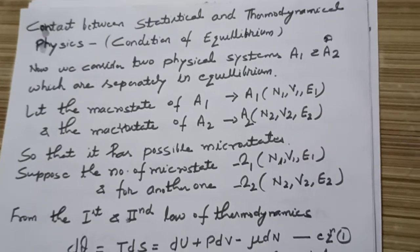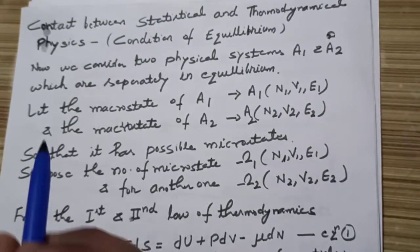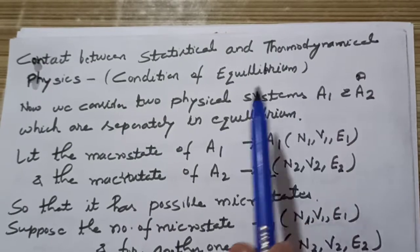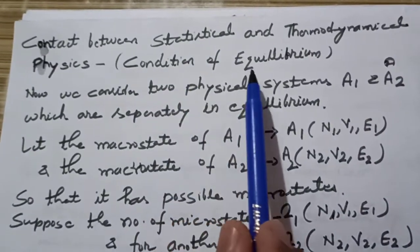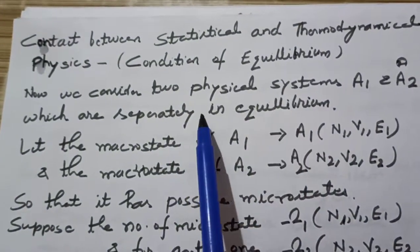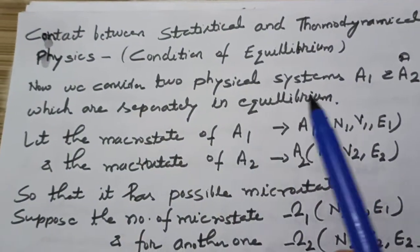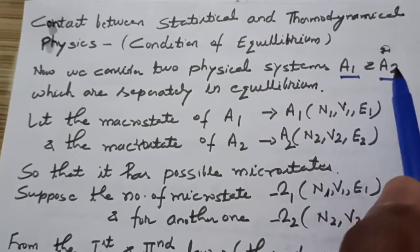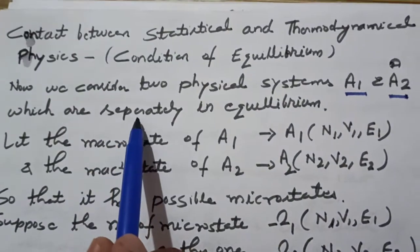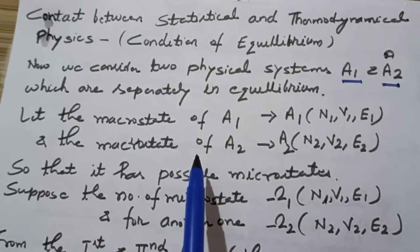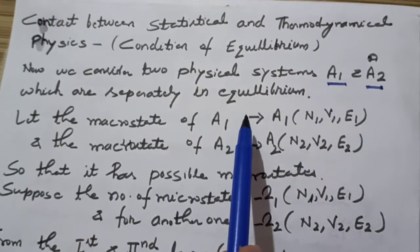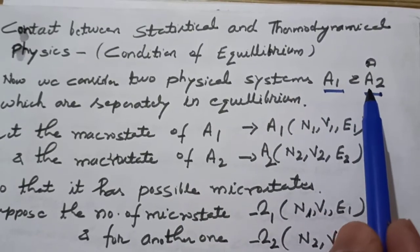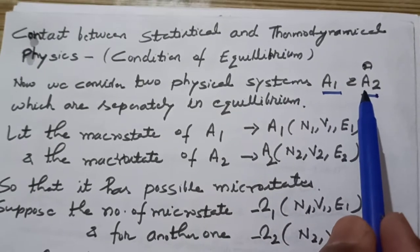Today in this class we will discuss contact between statistical and thermo-dynamical physics, meaning the condition of equilibrium. We consider two physical systems, A1 and A2, which are separately in equilibrium. A1 is in its own equilibrium and A2 is separately in equilibrium.